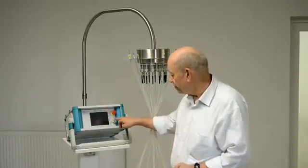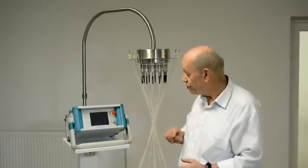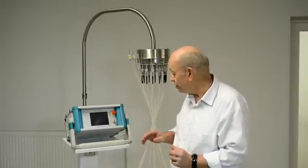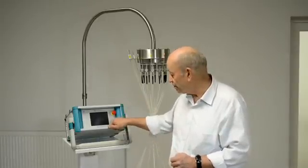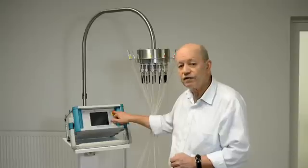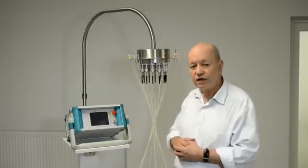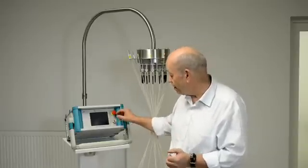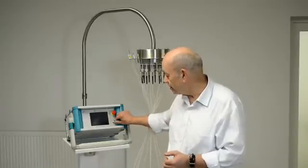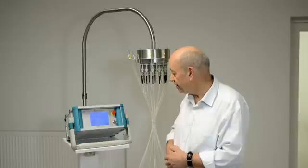You see the small and compact model on a newly developed trolley. I'll show you the different buttons on the device. We have on the right side down a key switch, and on the right side upside a so-called emergency switch. If something goes wrong or the patient is afraid of any sensation, he can switch off the device himself.